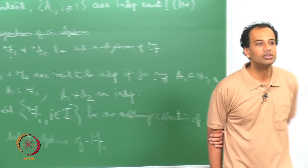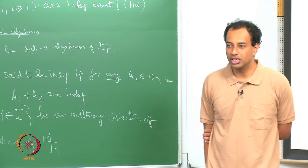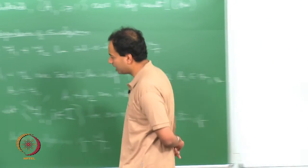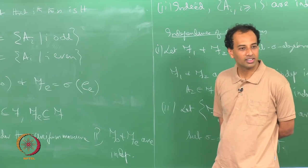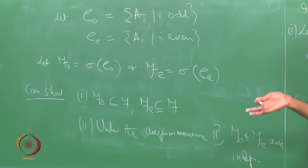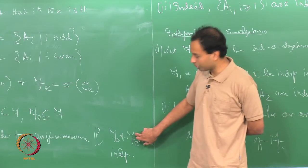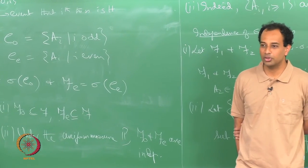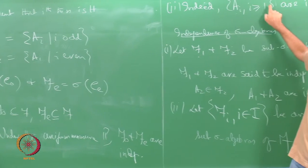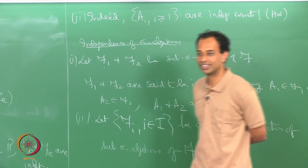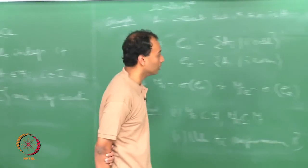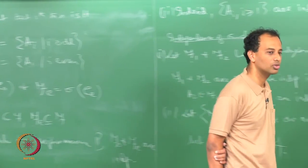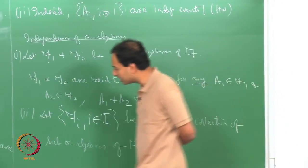To show this, fix any event from F_o and any event from F_e — they must be independent. The core of the argument is that any event from F_o only depends on the outcome of the odd-numbered tosses, and any event from F_e only depends on the outcome of the even-numbered tosses. Since across these indices the tosses are independent, putting these two facts together precisely shows that F_o and F_e are independent sigma algebras.